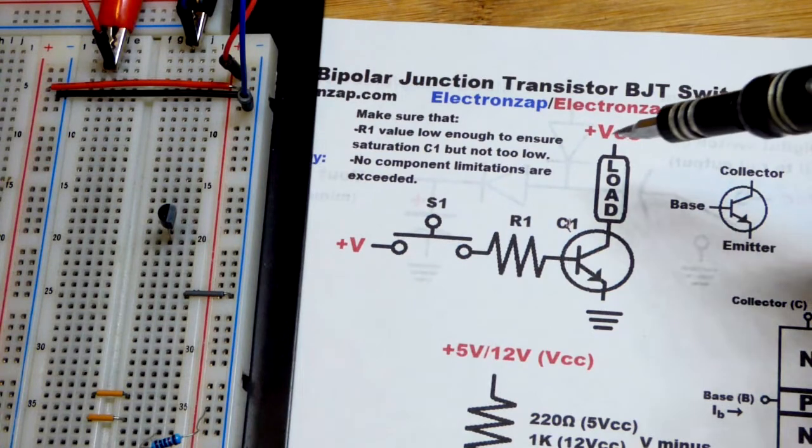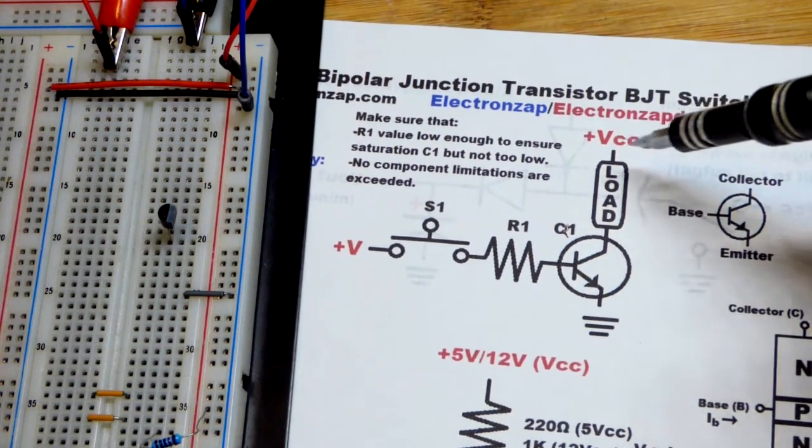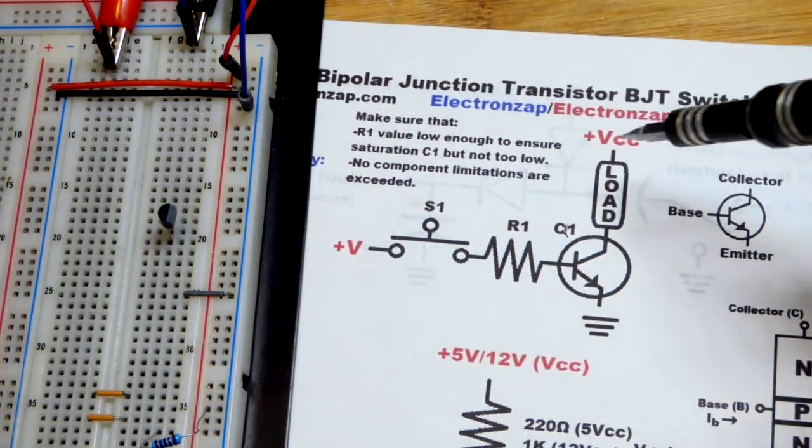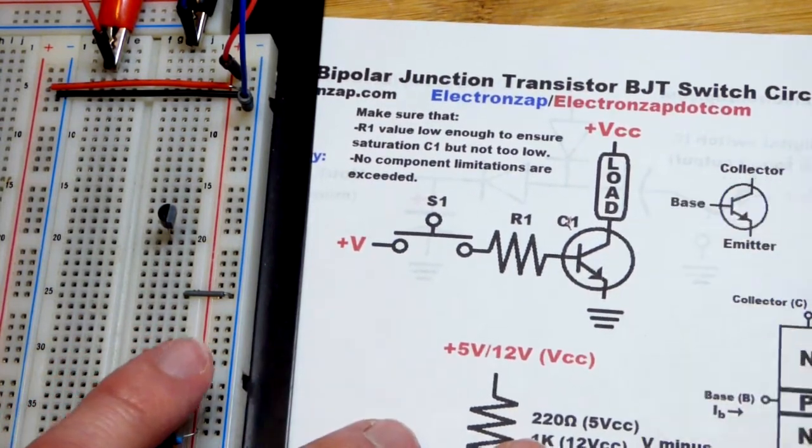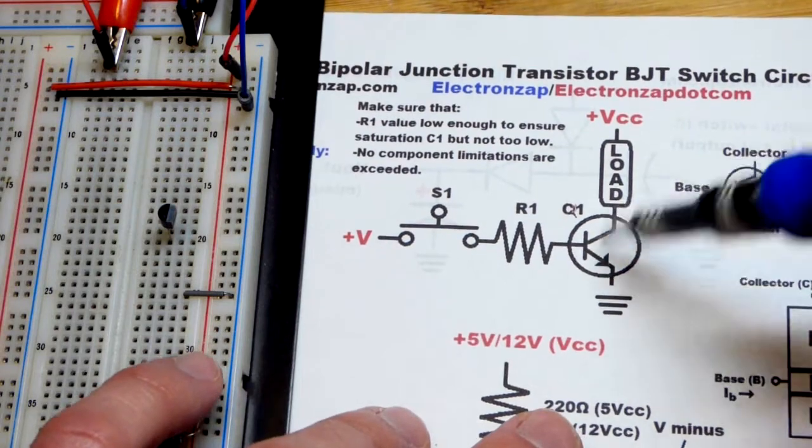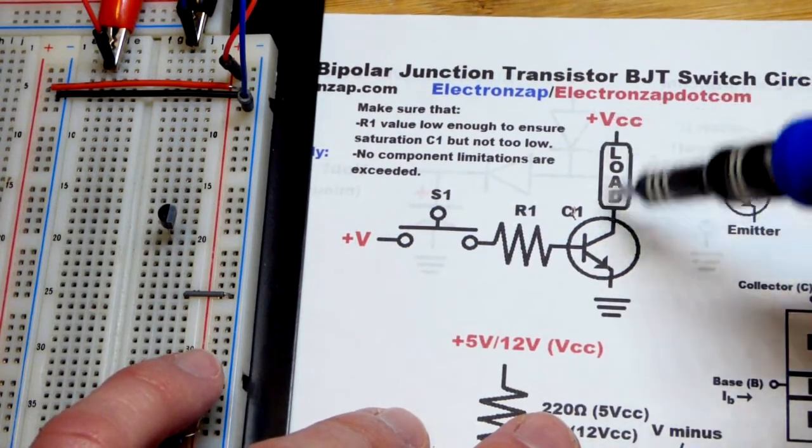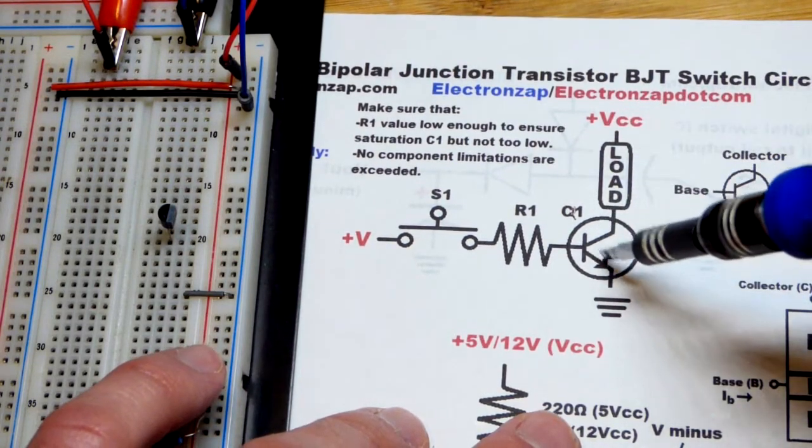Whatever voltage we set the power supply to, that will be the positive voltage in relationship to ground. The transistor, which is a switch in this circuit, is on the more negative side of the load. So we consider this the low side.